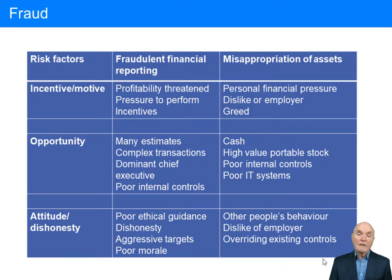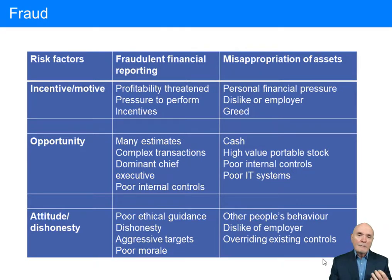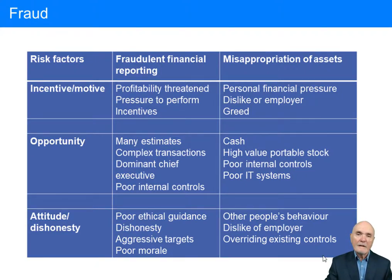Poor ethical guidance at the bottom of the organisation means people may see nothing wrong with inflating profits. Dishonesty and very aggressive targets can make people feel under pressure and aggrieved, and that feeling of being hard done by allows them to permit themselves to do something they know is wrong. Poor morale — simply being fed up, not caring very much, or expecting to leave the organisation soon — can lead someone to think: I may as well make things look good this year; I won't be here at the end of next year, so what does it matter?